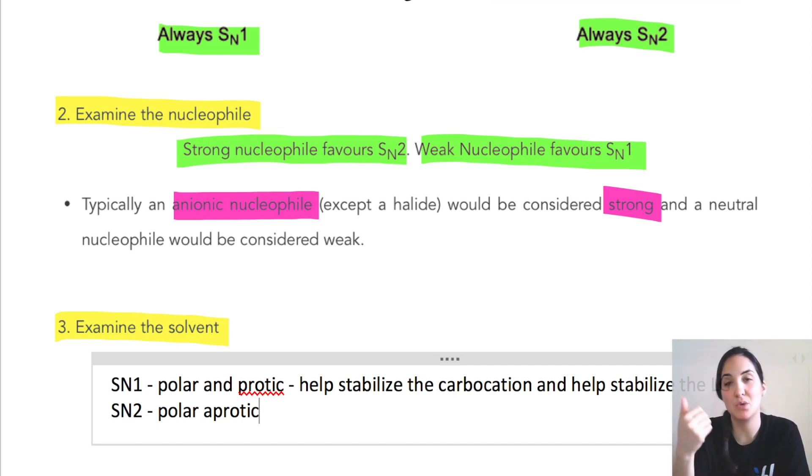In polar aprotic solvent, we do not have a carbocation and we need a strong nucleophile. If we had protons in solution, the protic solvent or those protons would weaken the nucleophile and therefore slow down the rate of the reaction or push towards more of an SN1 reaction.